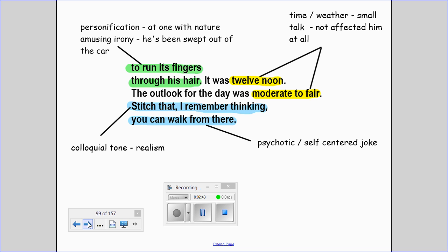The breeze running its fingers through his hair is personification, suggesting that the hitchhiker is at one with nature. But there is also an amusing irony here, as he's been swept out of the car, the wind is going to be running through his hair.